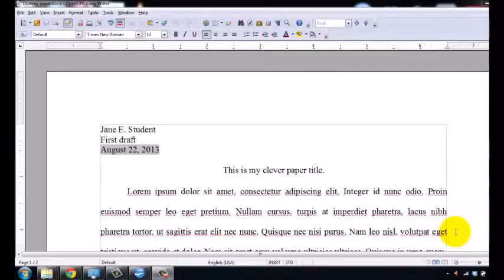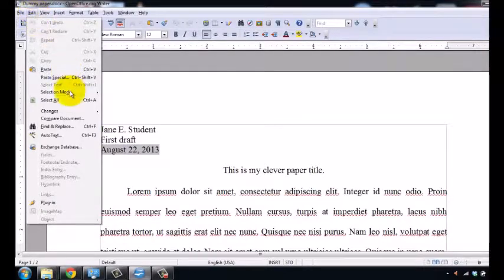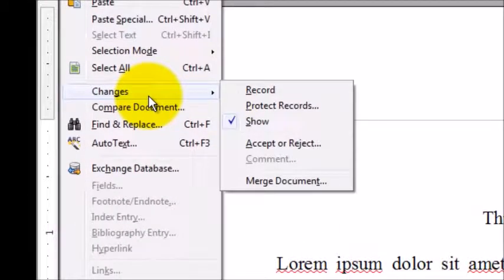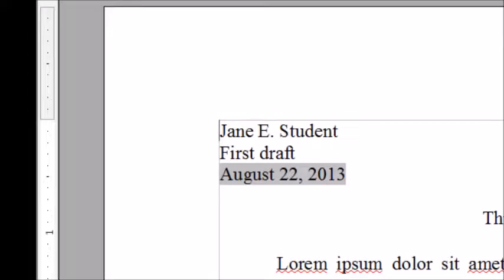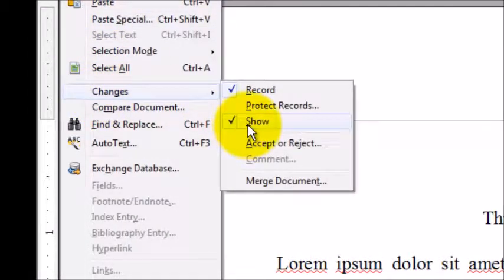If you are using OpenOffice, there are two things you have to check. What you do is you go over here to Edit, and then you go down to Changes. You want two things to be checked off. First, you need Record Changes, and then you need Show Changes. Once both of these are checked off, you're in Track Changes mode. Now, mine defaults to Show Changes. Yours may or may not do that.